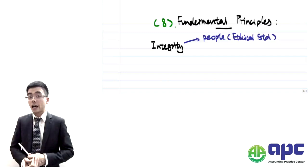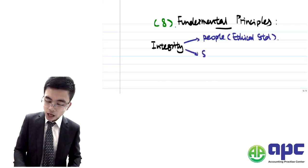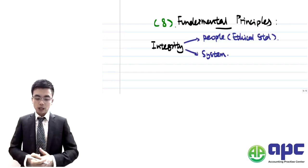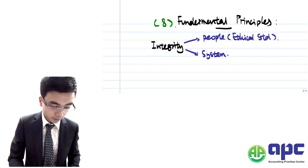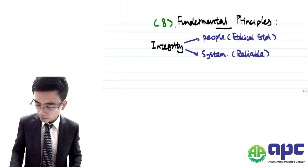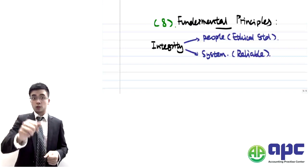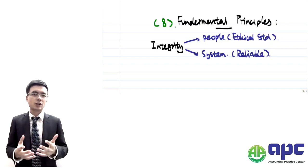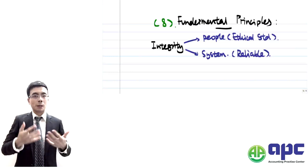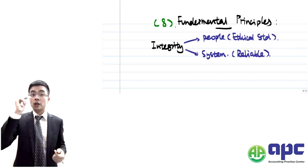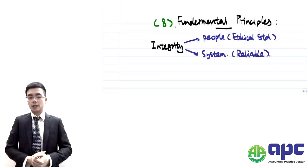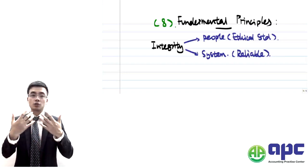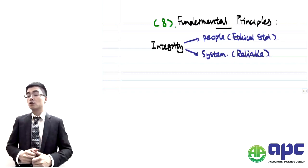We have to be ethical, and that also applies to systems — the system must have integrity, meaning it must be reliable. For example, if you're a shareholder considering investing in my company, but you find there's not enough segregation of duties, your money could be stolen by employees. Hence, you would not invest because you don't trust the company. The system is not reliable and not operating to utilise your money to make more money for you.